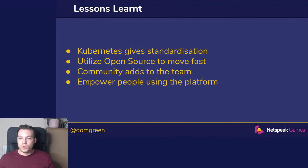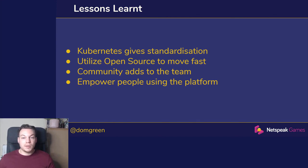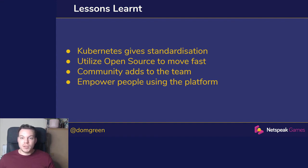What have we learned? Kubernetes gives us standardization — with containers, we run and build our dedicated game server in the same way we do our matchmaker and all our data services. It's one standard approach to infrastructure. We've utilized open source to make sure we can move fast, not building anything we didn't have to. The open source community also effectively adds to our team — they allowed us to move fast and help us when problems occur, rather than relying on something homegrown and custom. Empowering our people using the platform inside the studio is really important: if Kubernetes gets in the way of building the game, we won't be able to release it in the timeframe we need.